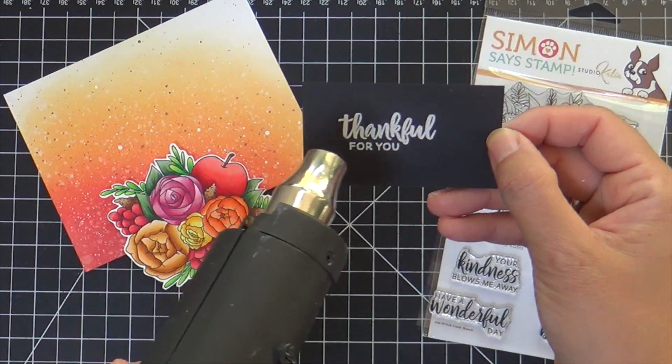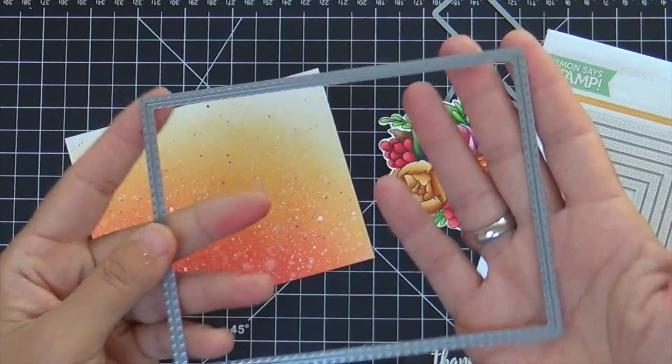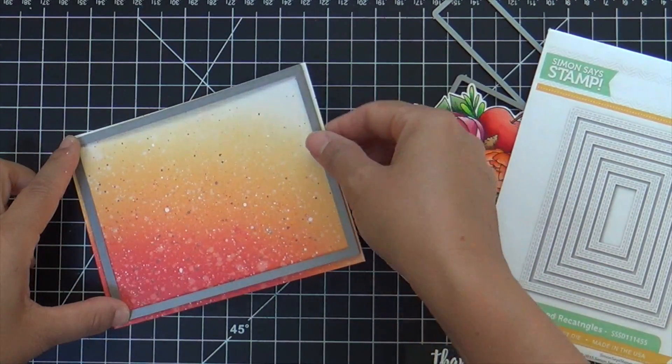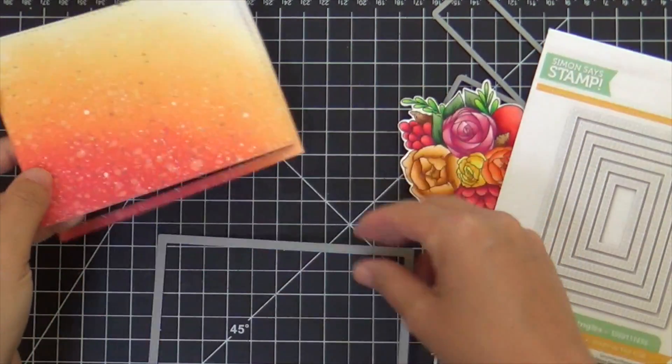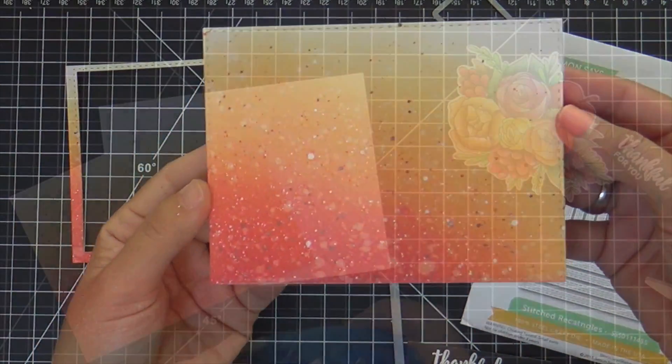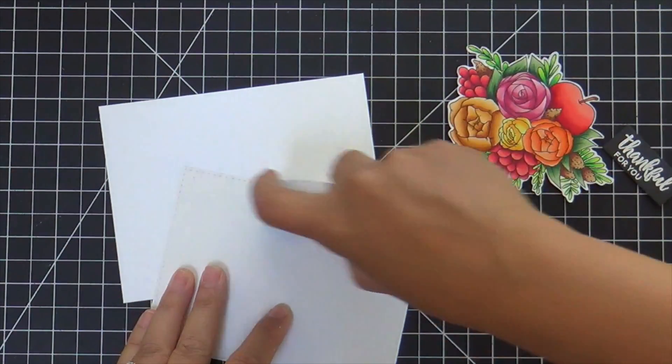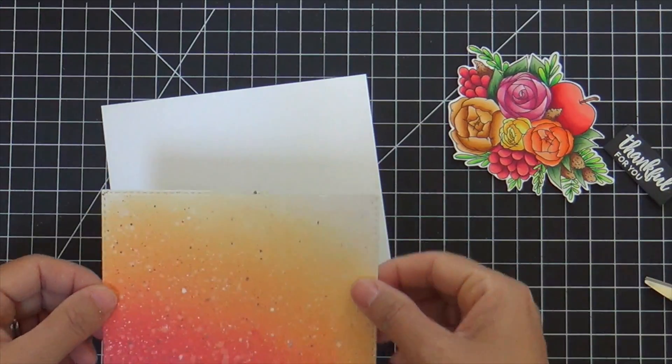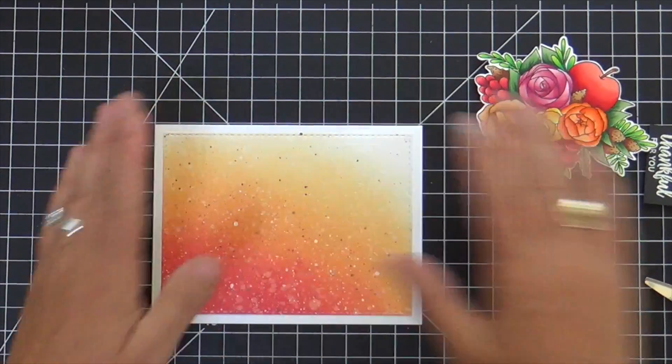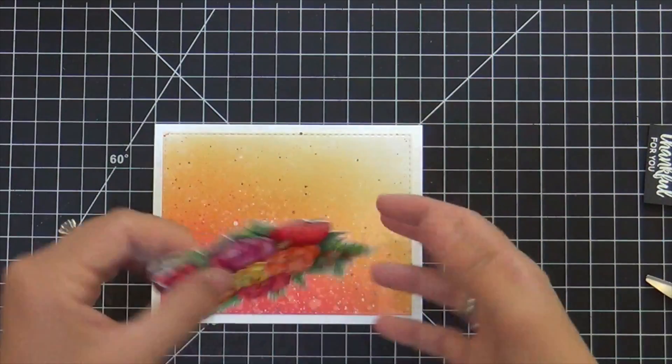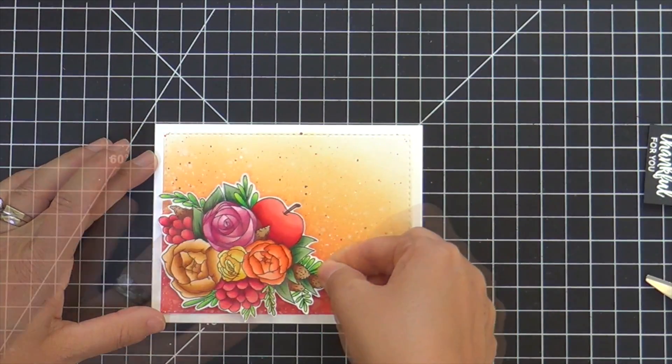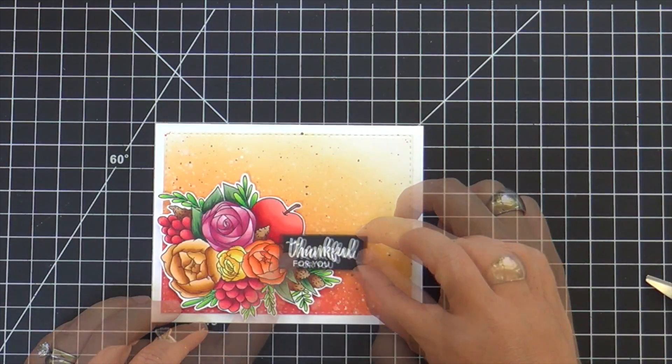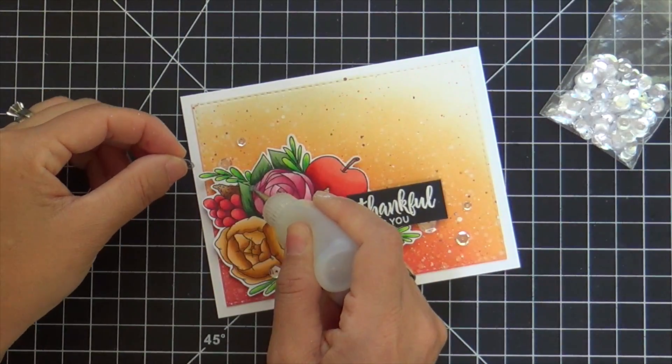I went ahead and stamped the sentiment, also from the Fresh Bunch stamp set. I'm taking one of these stitched rectangle dies and die cutting this flicked panel. I'm going to adhere this flat onto a Neenah Solar White card base. A lot of times I pop up my panels, but every now and again I'm going to just adhere them flat because I like to live on the edge and spice it up.